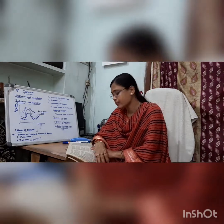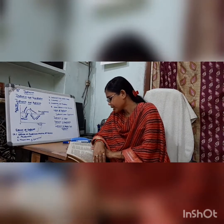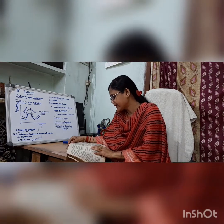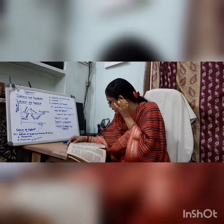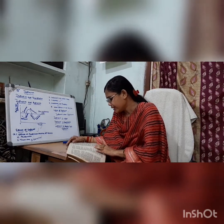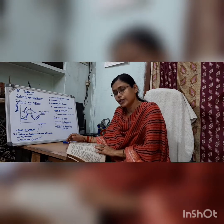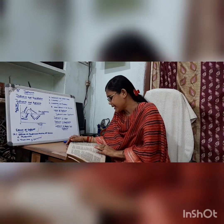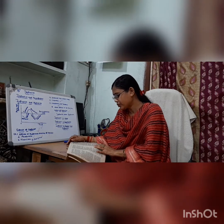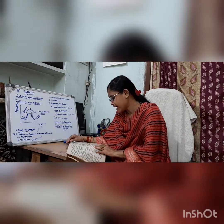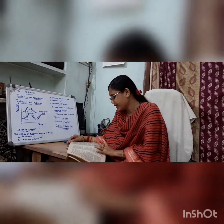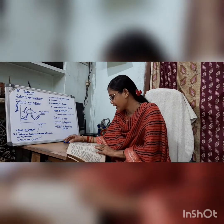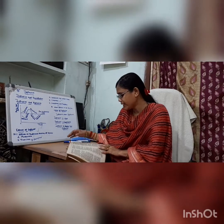Second, redistribution of income. Marginal propensity to consume can be raised by redistribution of income and wealth from the rich to the poor. Since the marginal propensity to consume of the poor is high and that of the rich is low, such a measure will help increase the aggregate demand in the economy.